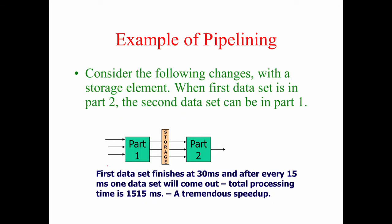Now suppose I put a storage element in between. This storage element is nothing but a register powered by a clock. The first set of data comes in and within one clock pulse, this data will get processed by Part 1 and be available for storage. When the clock pulse comes, the processed result of the first set of data gets stored in this storage element.